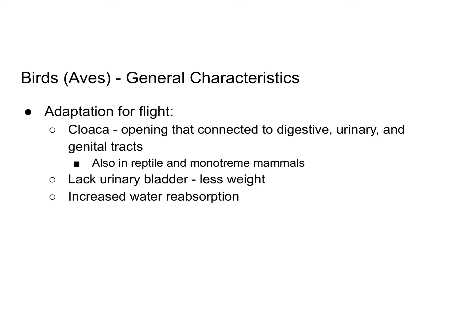Birds also have a structure called a cloaca, which is a single opening connected to the digestive, urinary, and genital or reproductive tracts. The cloaca is also associated with reptiles and monotremes — monotreme mammals are the ones that lay eggs, such as the platypus. Essentially, birds have one opening for getting rid of waste products, as well as for copulation and laying eggs.